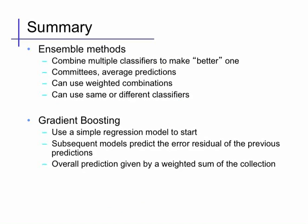In summary, gradient boosting is a particular kind of ensemble method that uses weighted sums of regressors to produce an overall better regressor. It works by using a very simple regression model to begin with, and then subsequent models are trained to predict the errors made by the model so far. So the models are trained sequentially and slowly focus in on the difficult to predict models. The overall prediction is then given a weighted sum of the collection, so that each predictor is evaluated and summed together with a weight given by the step size alpha.